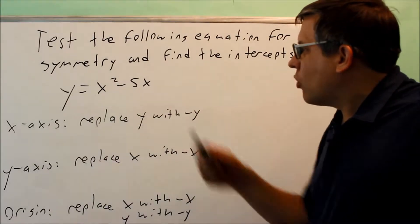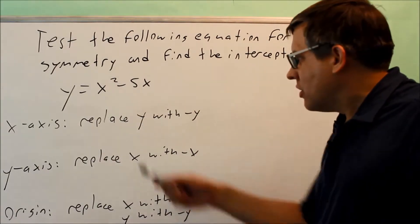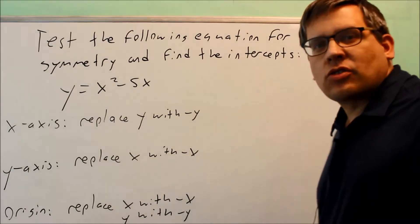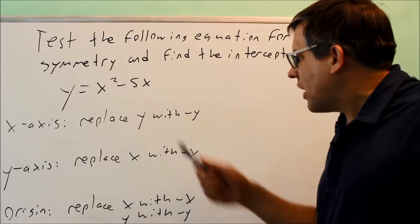We're going to test this equation for symmetry: y = x² - 5x. Here are the three different symmetry tests we need to perform: x-axis, y-axis, and origin.